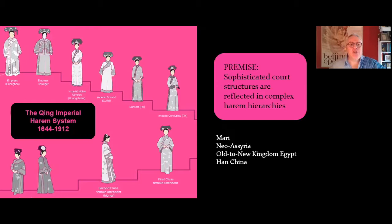This kind of structuring of the court and the harem is indicative of any kind of sophisticated court structure. We find a similar thing operating in China during the Qing period, where we have a highly formalised, systematic regulation of the ranks of women in the imperial household. We find exactly the same thing going on in Neo-Assyria, Old Kingdom and New Kingdom Egypt, in Han China, and in any sophisticated court society, of which Persia was most certainly to be included.